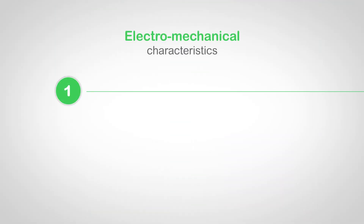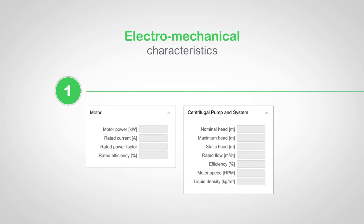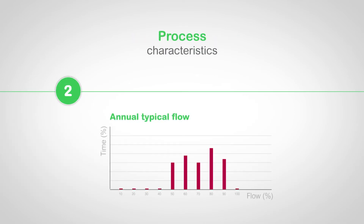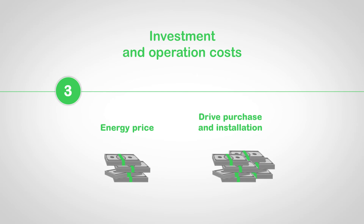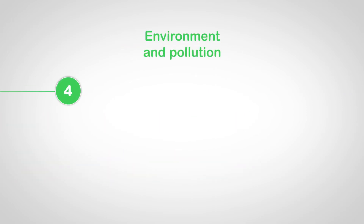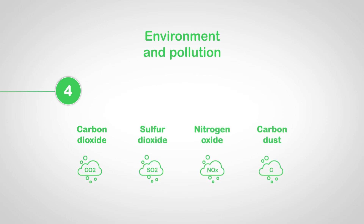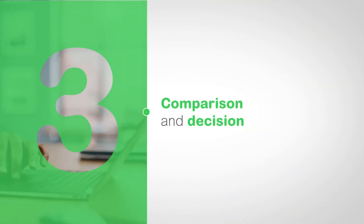Let's have a look at the main data to consider in a comparison. Electromechanical characteristics of the motor and the application are the basics — they will determine the magnitude of energy consumption and set the potential for efficiency improvement. Process characteristics are required to account for typical working conditions over the year, creating the reference for comparison. Investment and operation costs allow moving from the energy domain to the economic domain. Environmental and pollution information will support the sustainability approach.